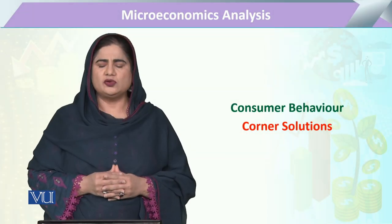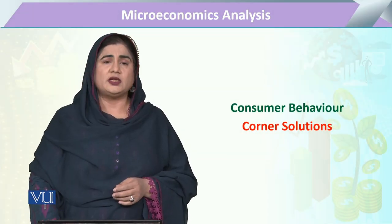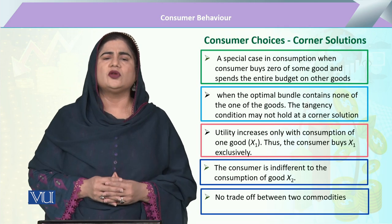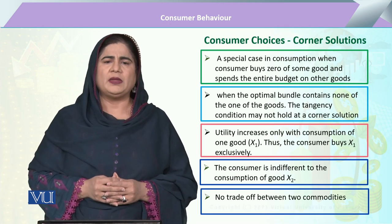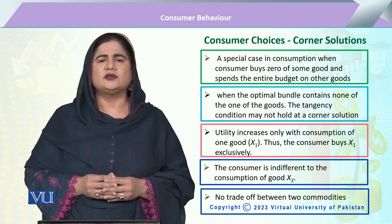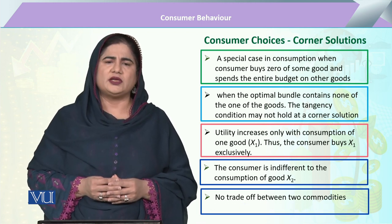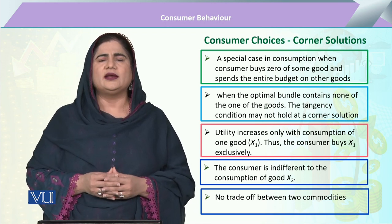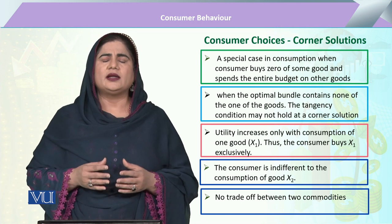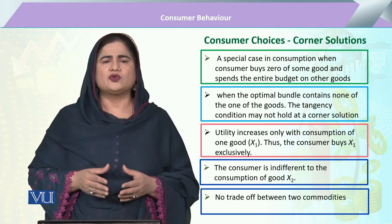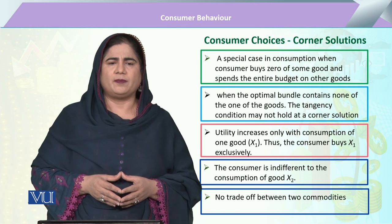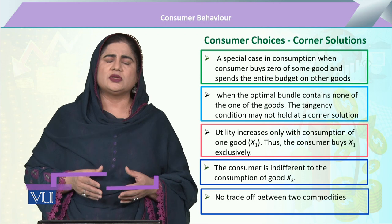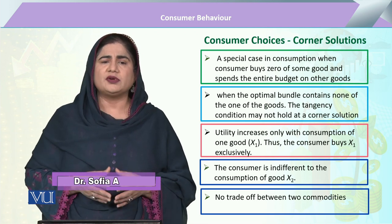In this module, we are going to study consumer behavior and how the consumer maximizes his utility. We have studied that the consumer purchases two commodities X1 and X2 at their respective prices, and at the point of tangency he maximizes his utility. But this situation does not always prevail — there can be a different situation.